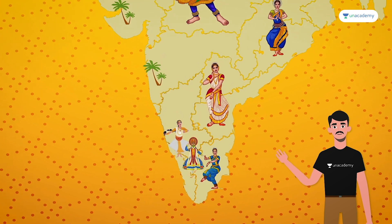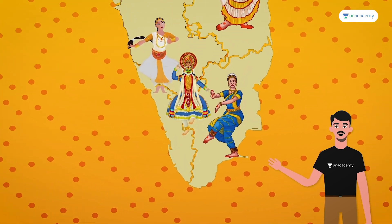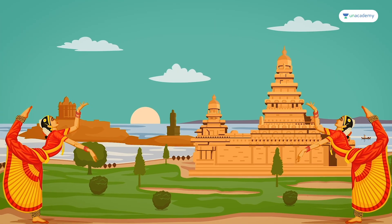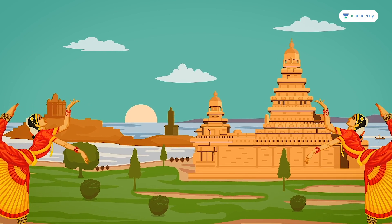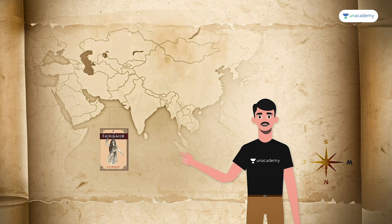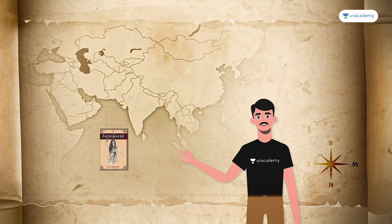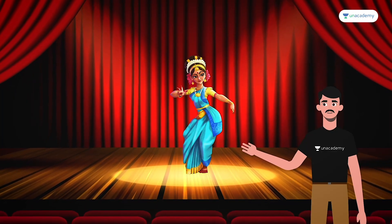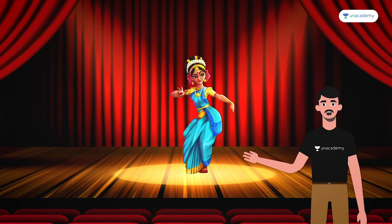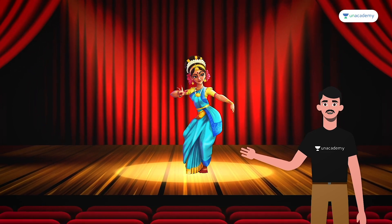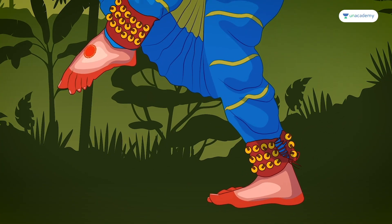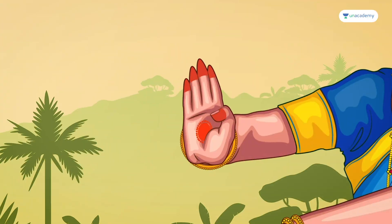One of the most popular and oldest forms of classical dance is Bharatanatyam, the existence of which by the 2nd century CE is noted in the ancient Tamil epic Silappatikaram. This form of dance is known to be Ekahariya, where one dancer takes on many roles in a single performance. The dance involves transitional movements of leg, hip and arm.